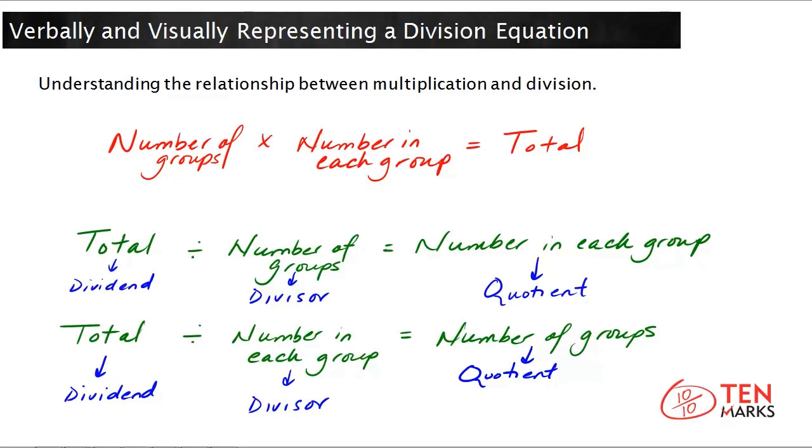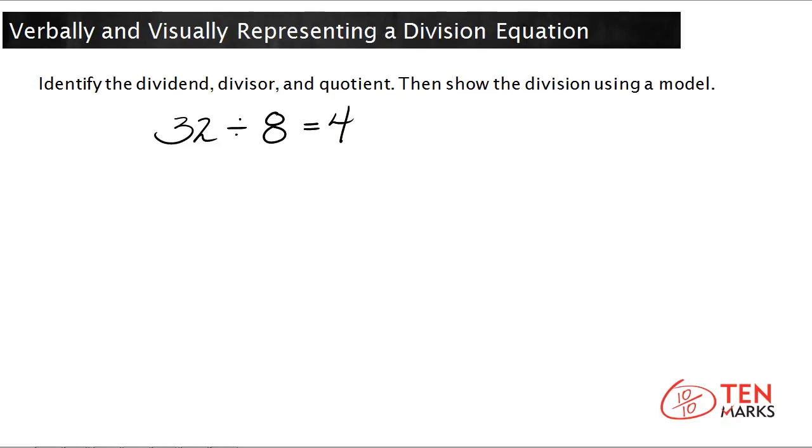Great, now let's solve a problem together. Identify the dividend, divisor, and quotient. Then show the division using a model. The division sentence you have is 32 divided by 8 equals 4.